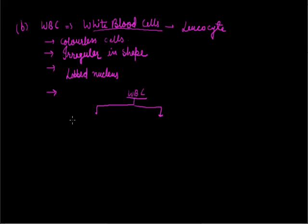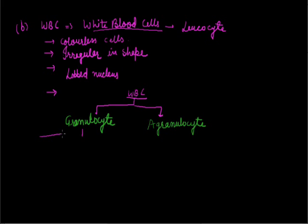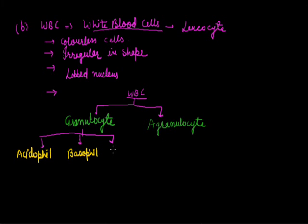WBC can be classified on the basis of the presence of granules in the cytoplasm. If granules are present, the cells are called granulocytes; if granules are absent, they are called agranulocytes. Granulocytes can be further divided based on function and staining: the first is acidophil (eosinophil), the second is basophil stained by basic stain, and the third is neutrophil. Agranulocytes are further classified as monocytes and lymphocytes.